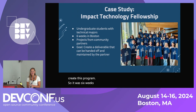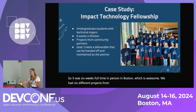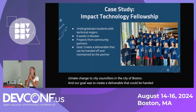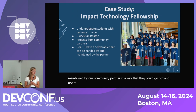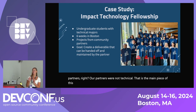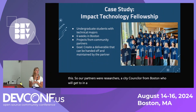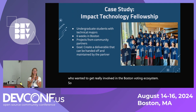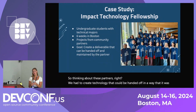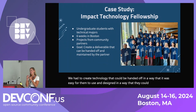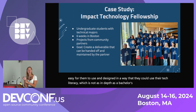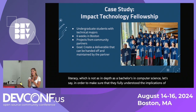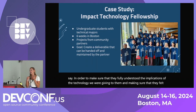The program was six weeks, full-time, in-person in Boston. We had six different projects from community partners across sectors — from climate change to city councilors in the city of Boston. Our goal was to create a deliverable that could be handed off and maintained by our community partner in a way they could use for years to come. This was tricky because our partners were not technical. Our partners were researchers, a city councilor from Boston, and a new nonprofit from journalism who wanted to get involved in the Boston voting ecosystem. We had to create technology that was easy for them to use given their tech literacy.